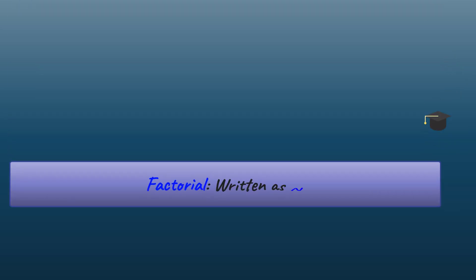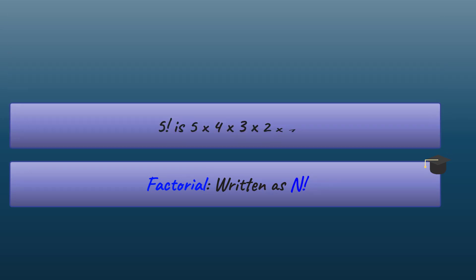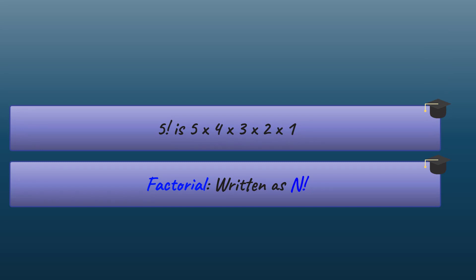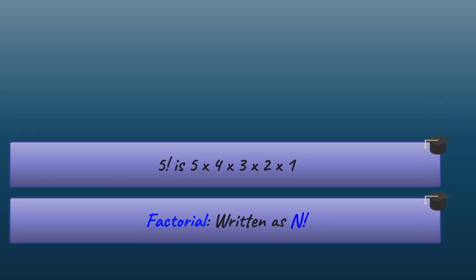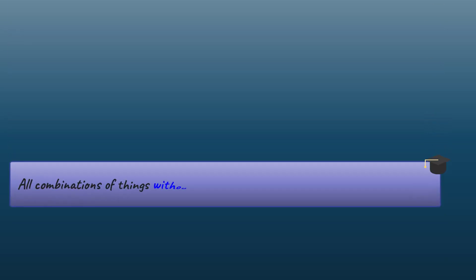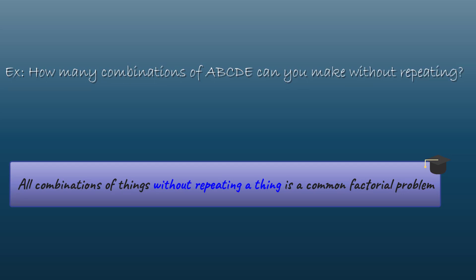Factorial numbers — written as n with an exclamation point — grow very quickly as well. For example, 5! is 5 × 4 × 3 × 2 × 1 = 120. You typically get factorial efficiency when looking for all combinations of something without repeating items — like all combinations of letters a, b, c, d, and e without repeating each letter.